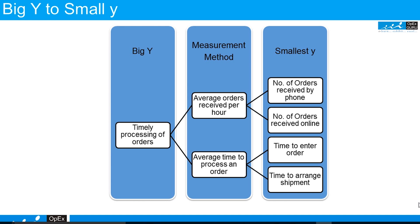The average orders received per hour has two Small Ys: number of orders received by phone and number of orders received online. Time to process an order has two Small Ys: time to enter the order and time to arrange the shipment. So we have four Small Ys for one Big Y.